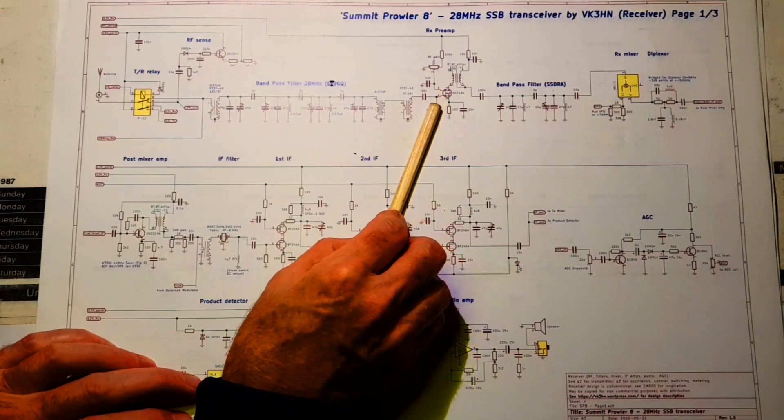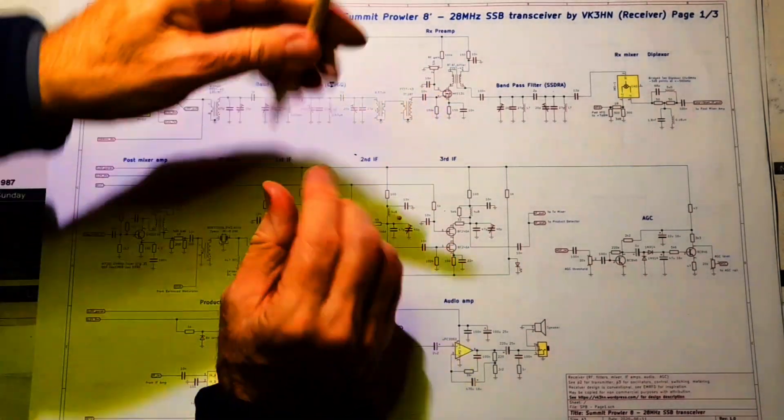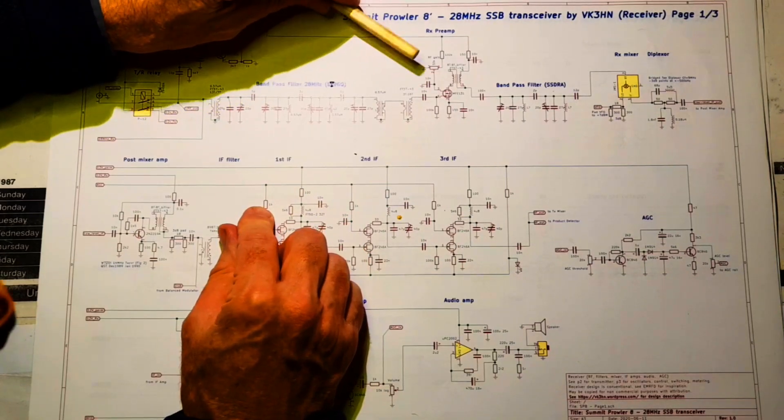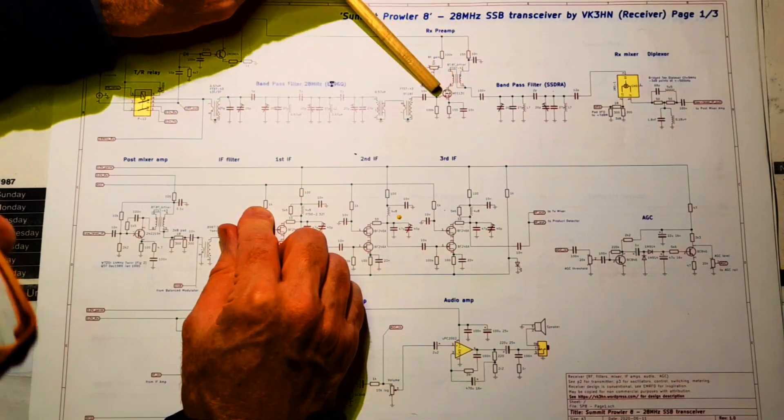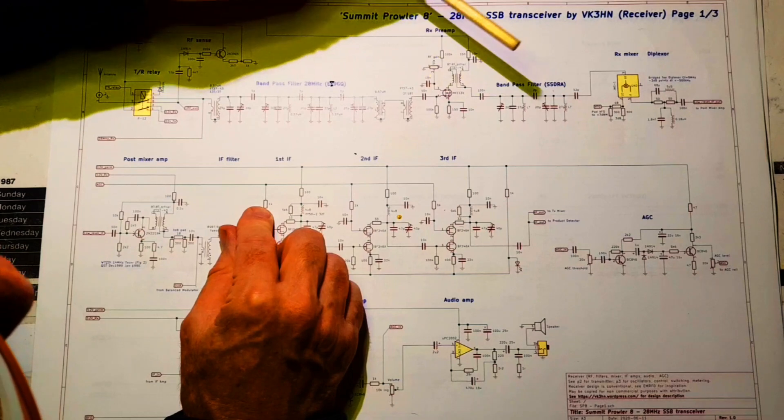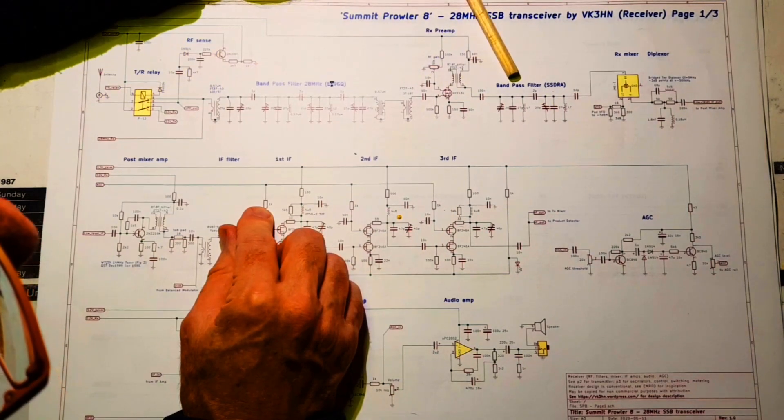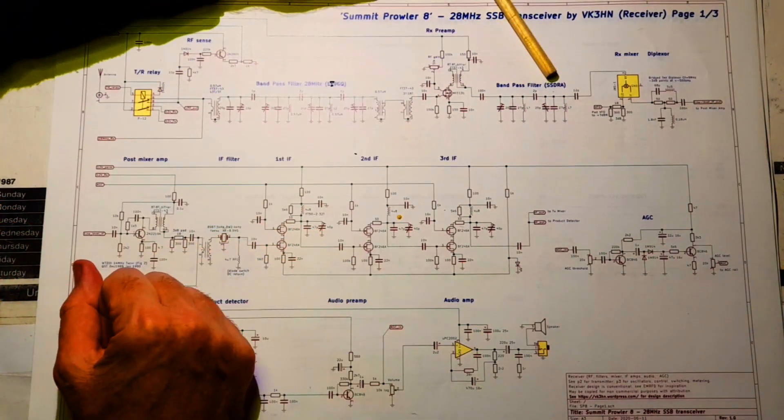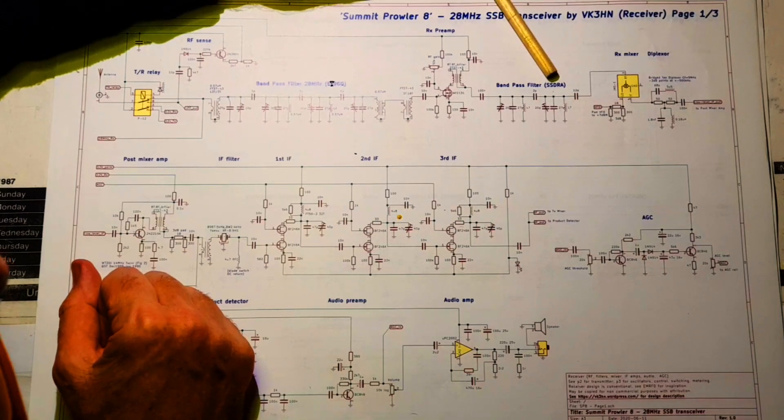A transformer coupled into an RF amp, this one is an MFE131, so a dual gate MOSFET. And this is a very standard circuit. This time though it's followed by a second bandpass filter. This is from Solid State Design for the radio amateur.